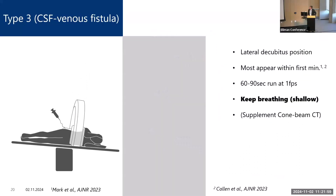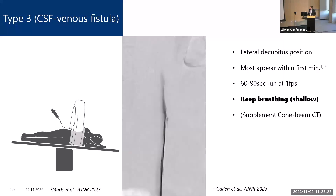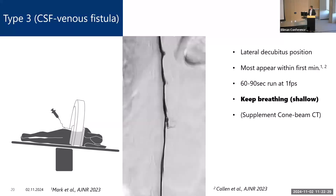Type 3 leaks — CSF venous fistulas — can be performed in exactly the same manner as Type 2 leaks. They mostly appear very early, within the first minute, so we suggest a 60 to 90 second run at one frame per image, with the patient breathing. Here is an example of a CSF venous fistula: we see a meningeal diverticulum filling with contrast, contrast running into the veins, and a typical washout phenomenon.